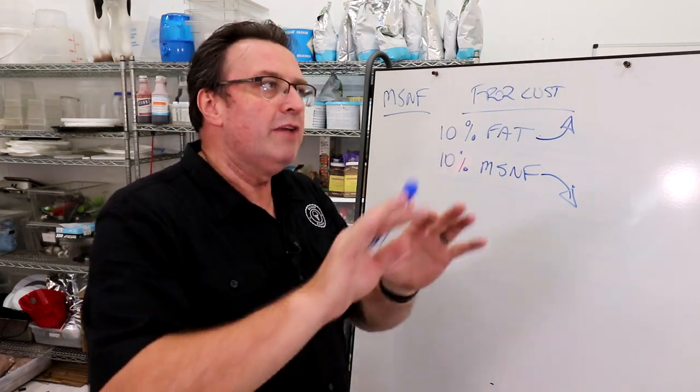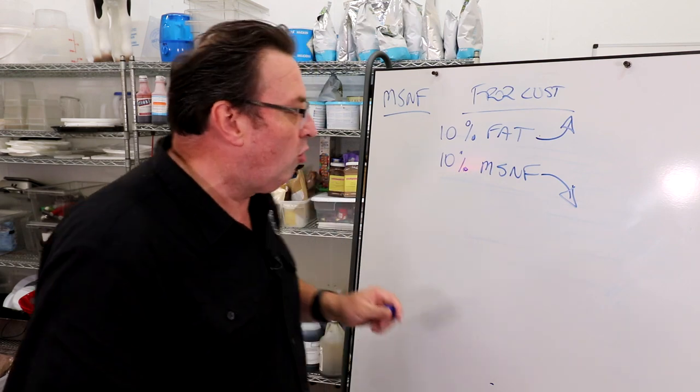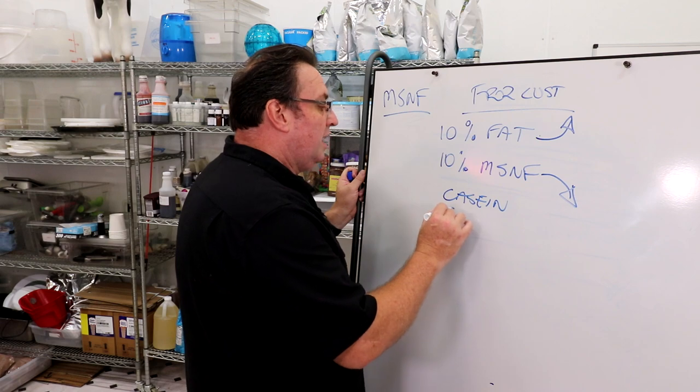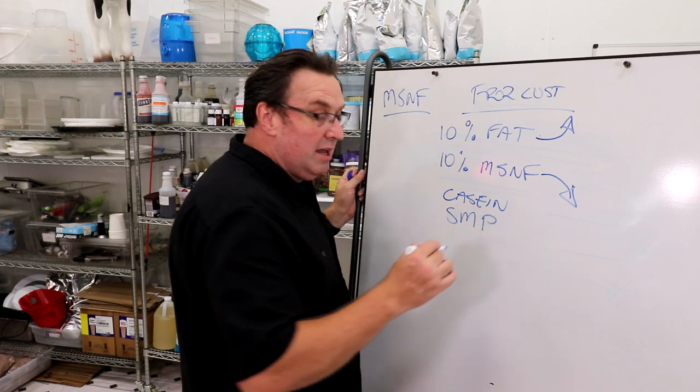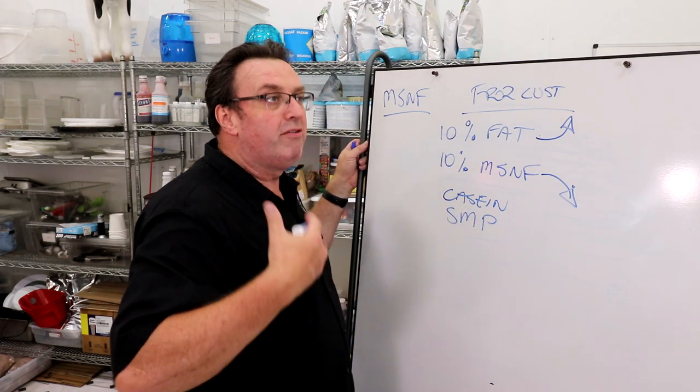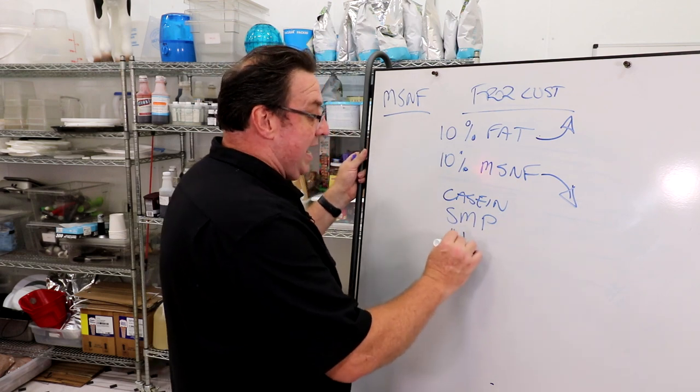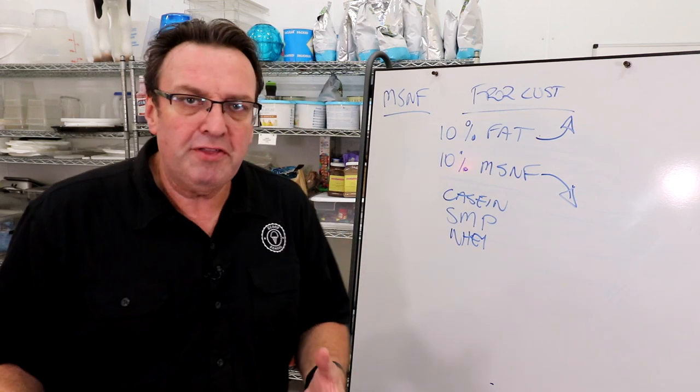Now if you jump back to what we were saying before, where do those solids come from? Well, there's casein protein, there's skim milk powder which gives you a bulking agent and provides solids but not fat. You've also got whey in here as well.